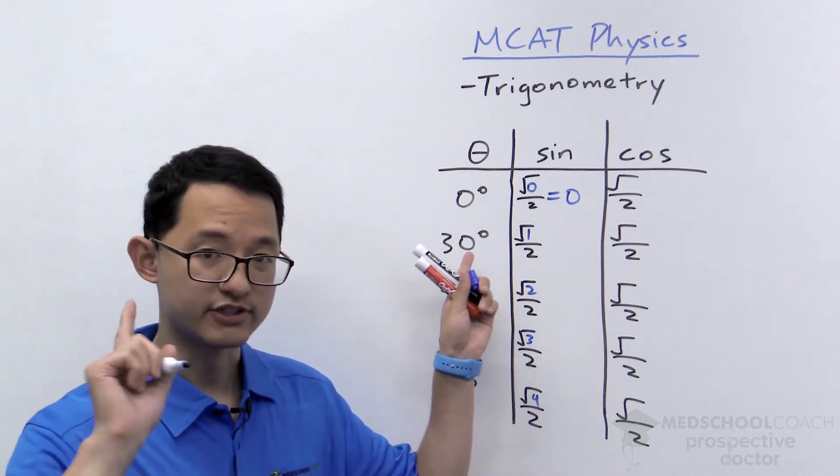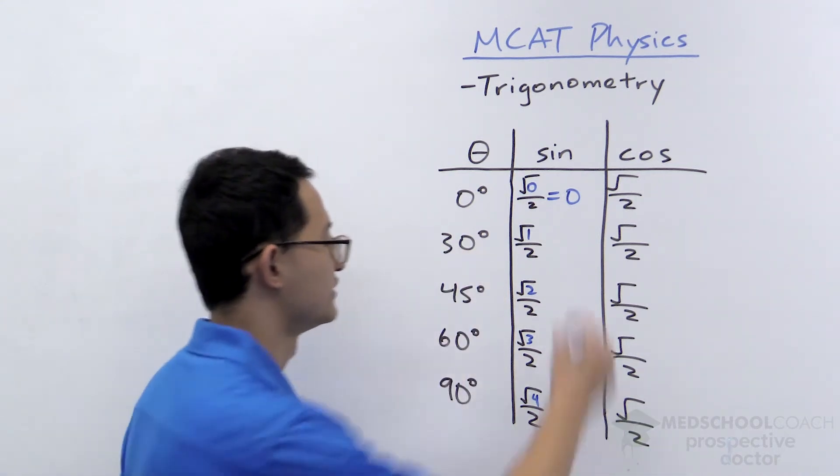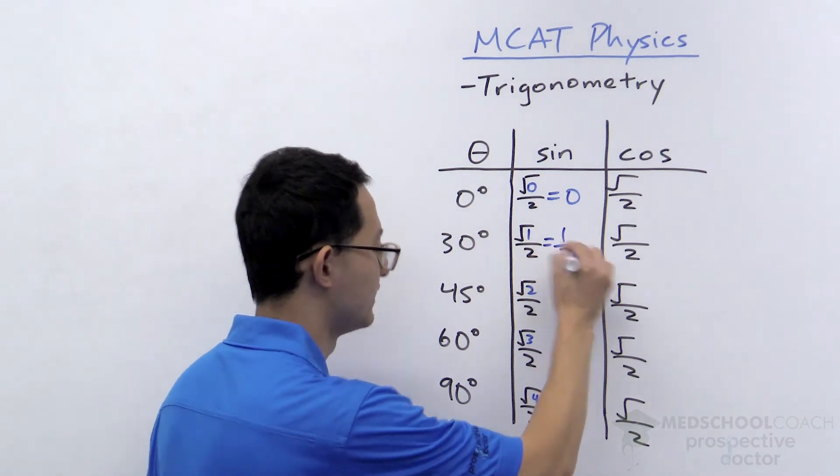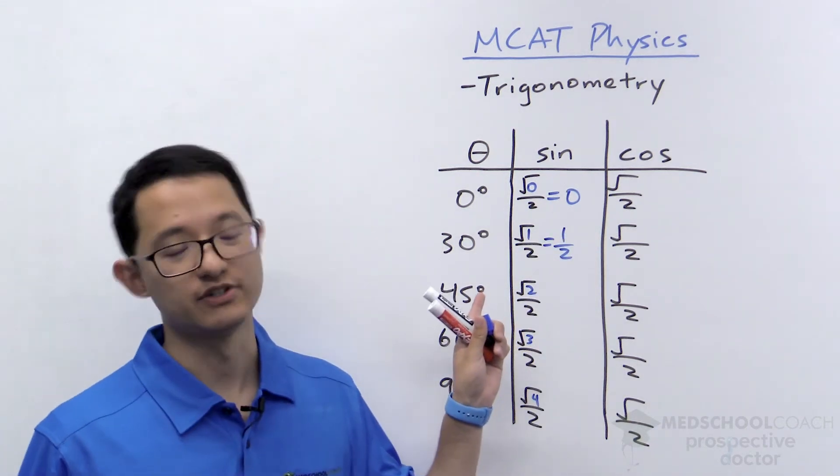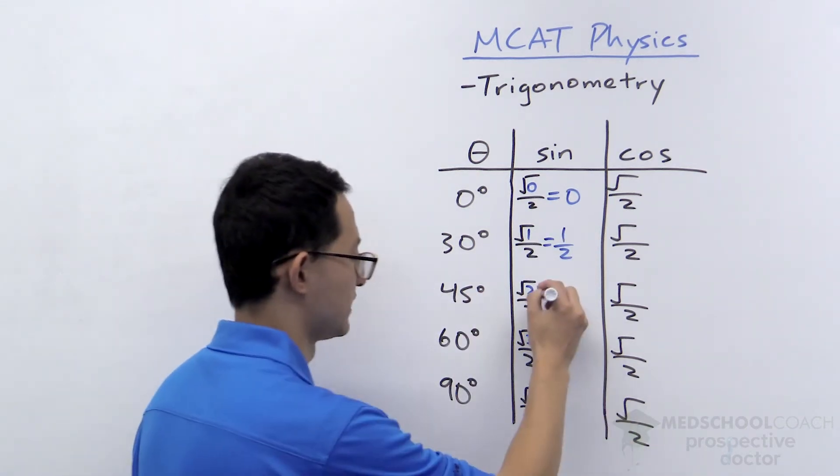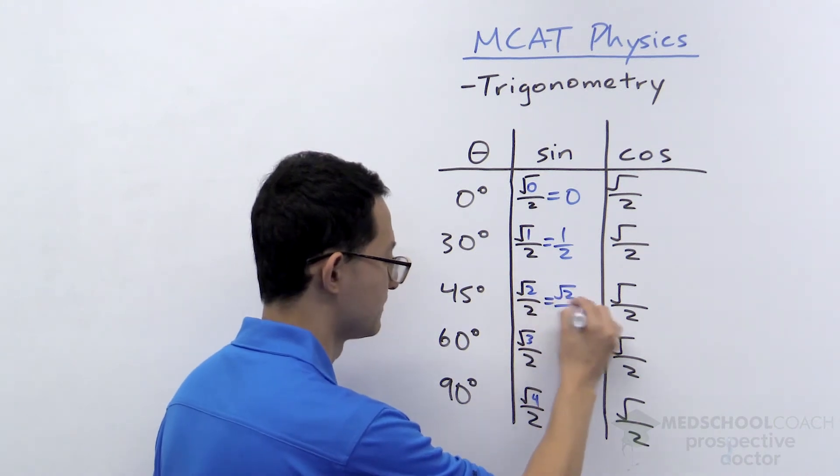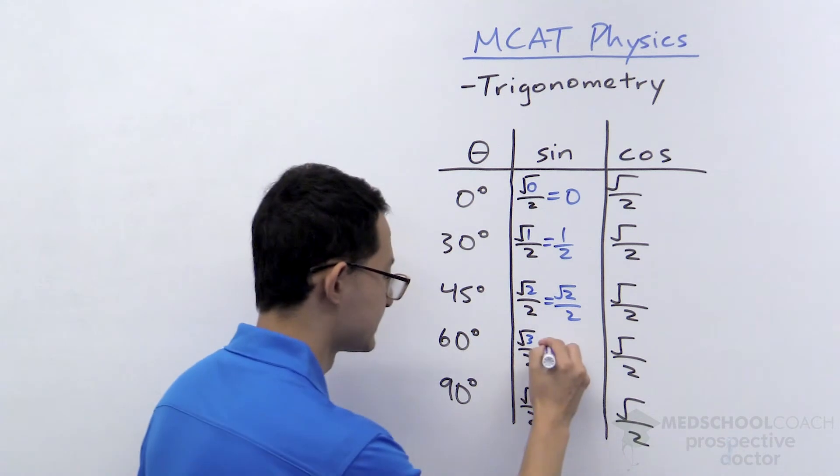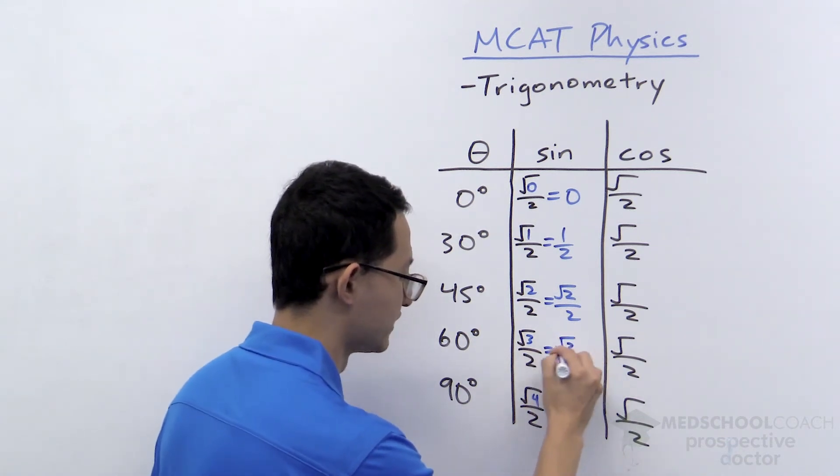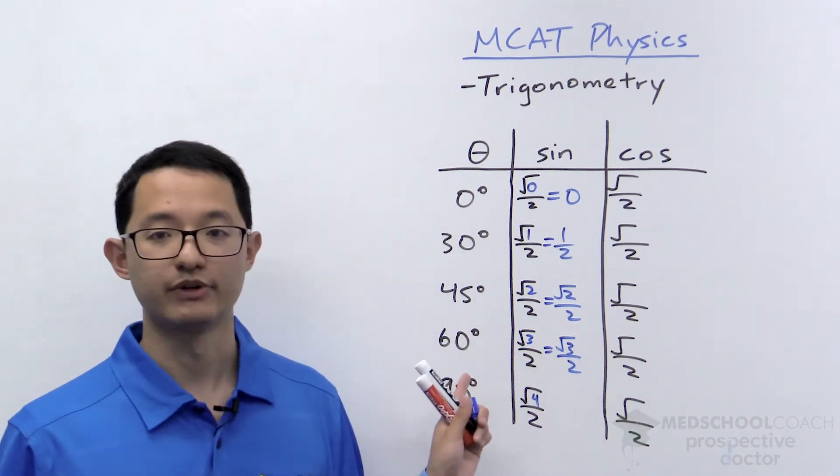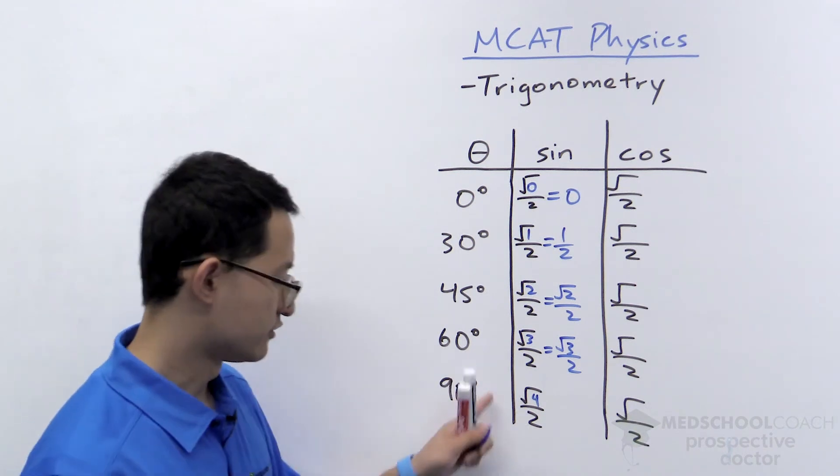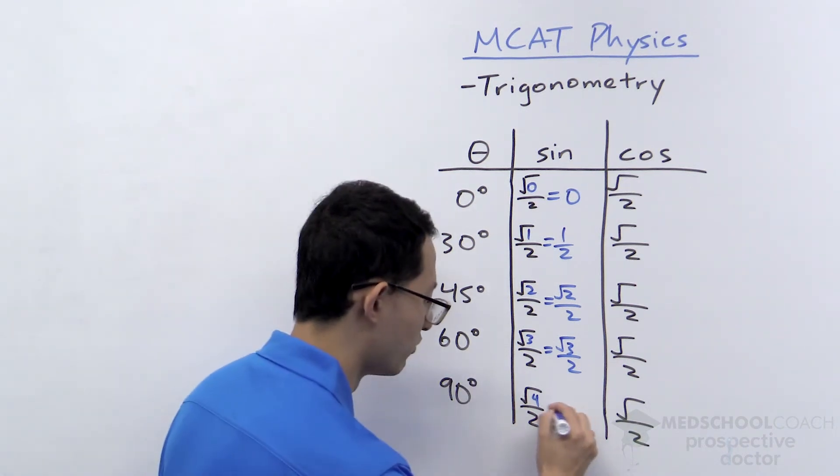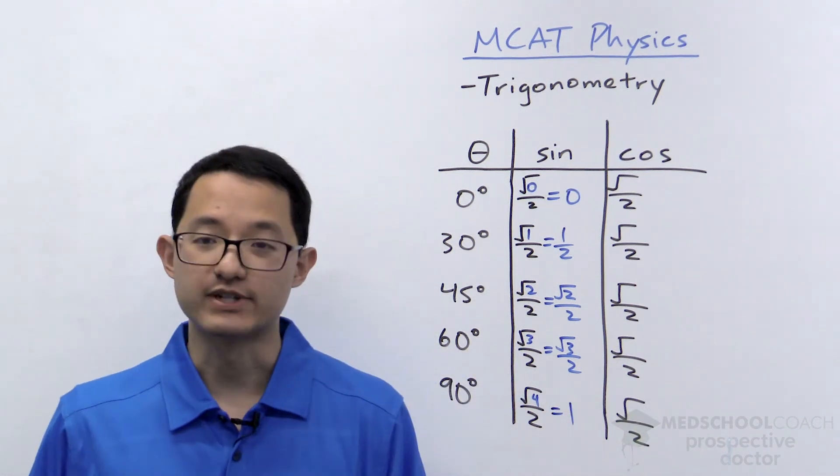The square root of 1 is just 1. And 1 over 2 is just 1 half. Square root of 2 is just square root of 2. So that's going to give us root 2 over 2. Square root of 3 is just square root of 3. So that gives us square root of 3 over 2. Square root of 4 is 2. So 2 over 2 gives us 1. So that's for sine.